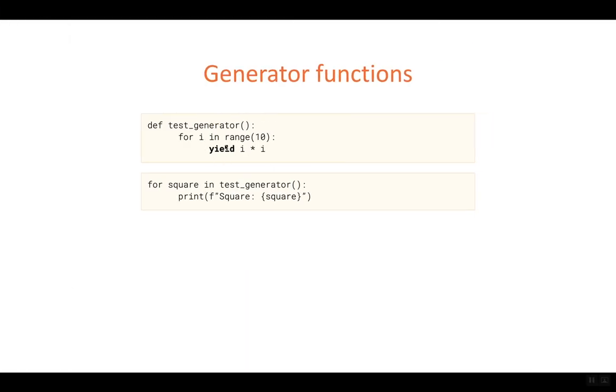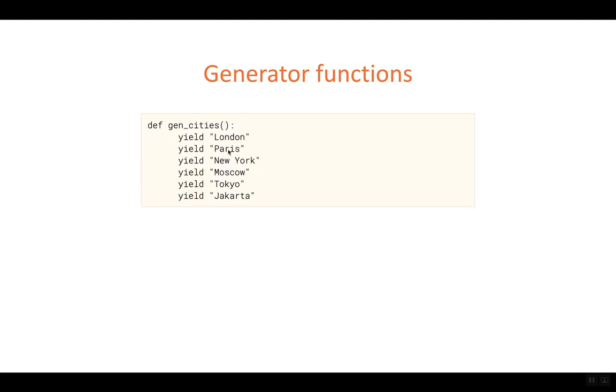So we can see how the function can yield multiple values, can provide us with multiple values, but we don't need to automate that. We can call the yield keyword multiple times.